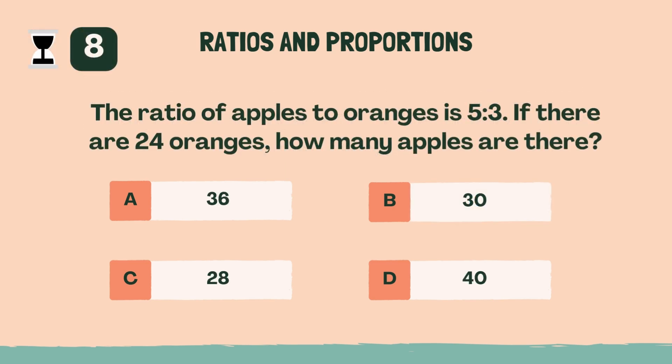The ratio of apples to oranges is five to three. If there are twenty-four oranges, how many apples are there? D, 40.